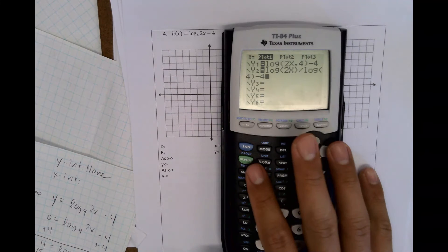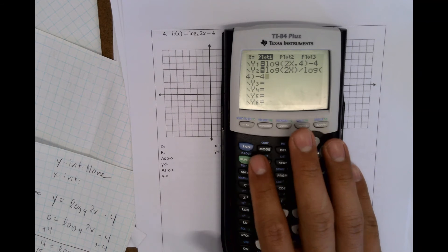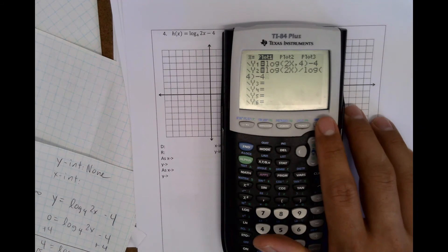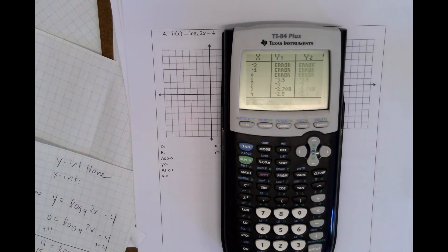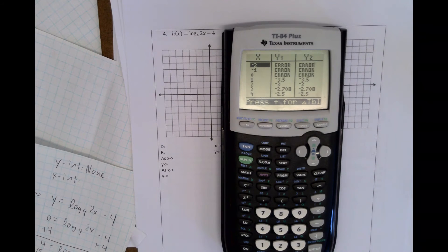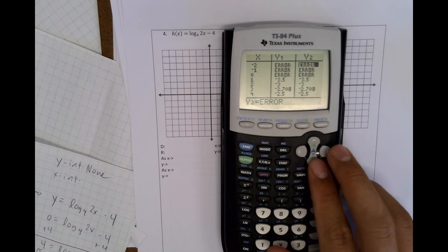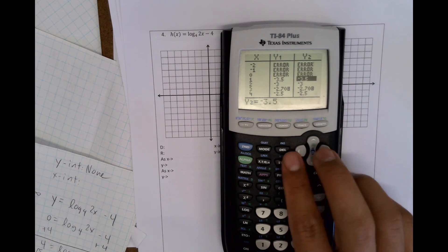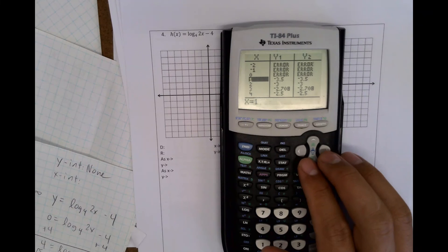So you press second, which is the blue button right here. And you hit graph, which is on the very far right, top right. And you can see here that I have two columns, two extra columns, because one of them is exactly the same thing. But you can see that they have exactly the same values. So you can see here that I would actually start at 1, and I would start writing down all those values.